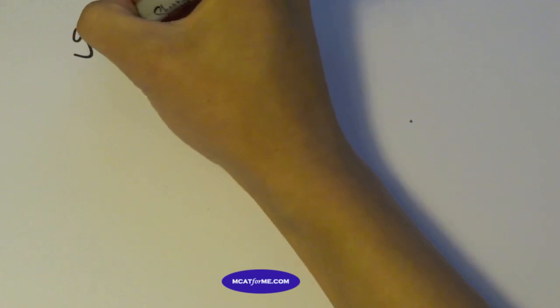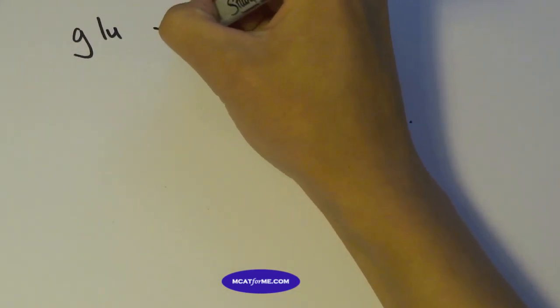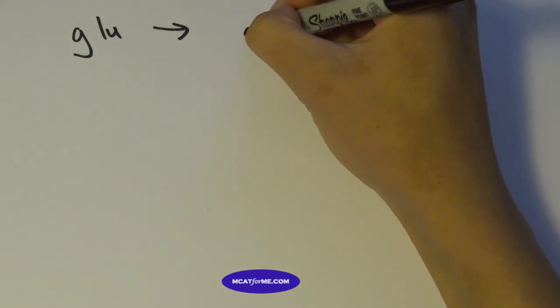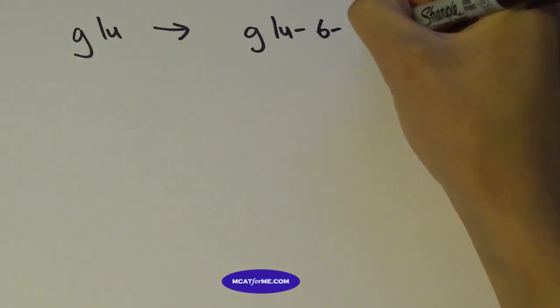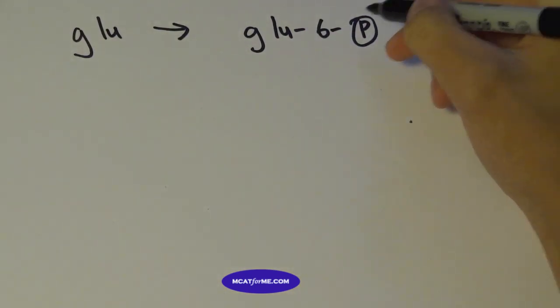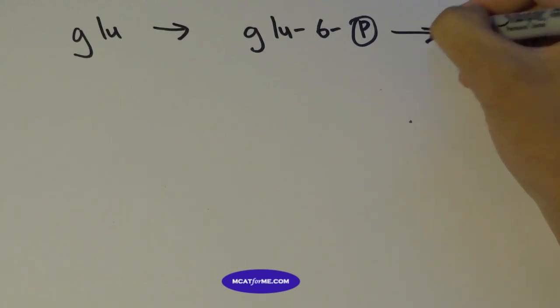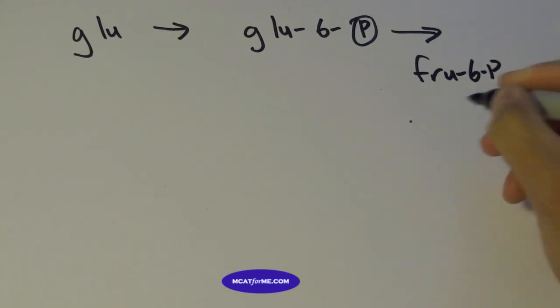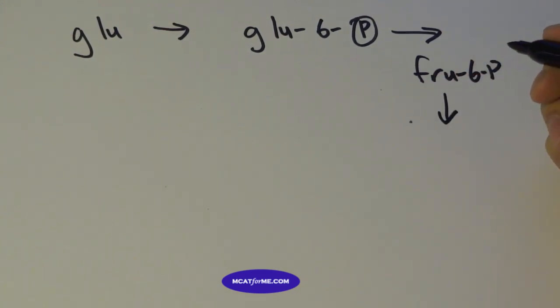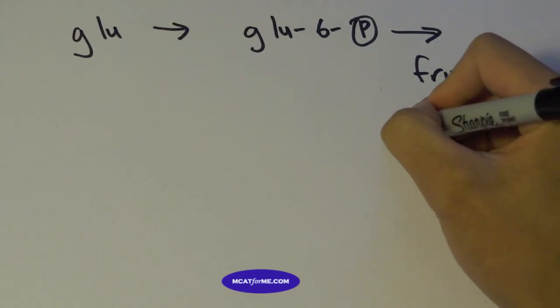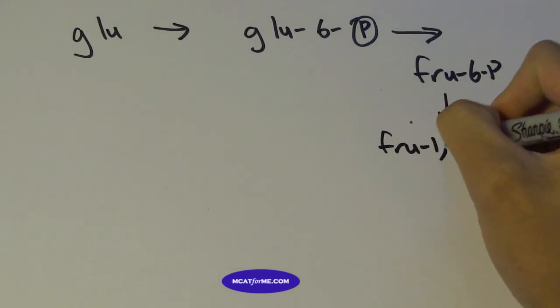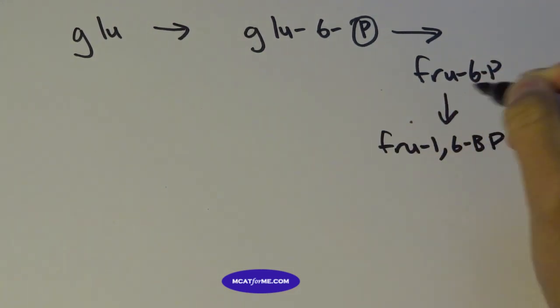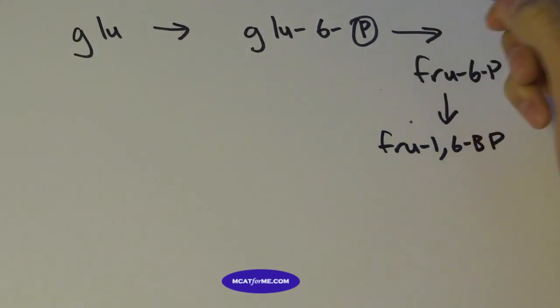So back to the actual steps of glycolysis. So we start out with glucose. And then we're going to go down to glucose 6-phosphate. So all we did was add a phosphate group on the 6th carbon. Then from glucose 6-phosphate, we're going to go over to something called fructose 6-phosphate. And that's just the isomerase. And then from fructose 6-phosphate, we're going to add another phosphate group. So fructose 1,6-bisphosphate.